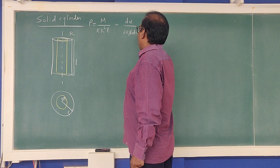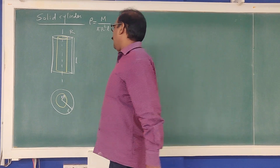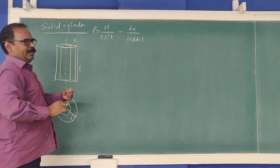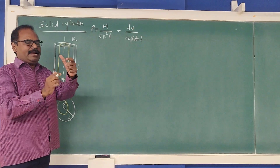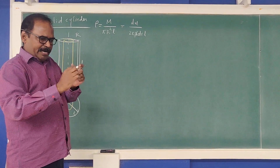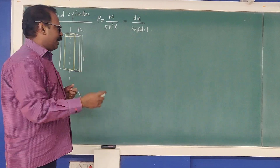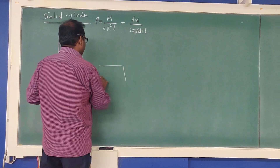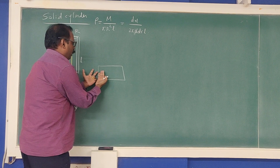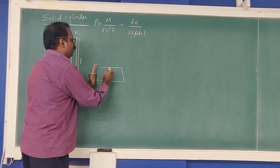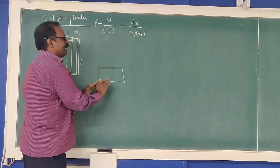The volume element is 2πr · dr · L. To understand why, imagine cutting the hollow cylinder and opening it out — it becomes a rectangular sheet. If you roll that rectangular sheet back up, it makes the hollow cylinder. So dm = ρ · 2πr · dr · L.